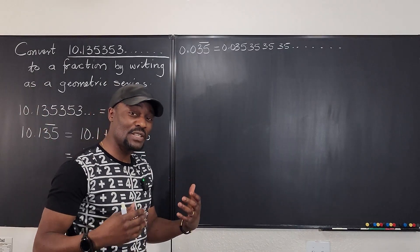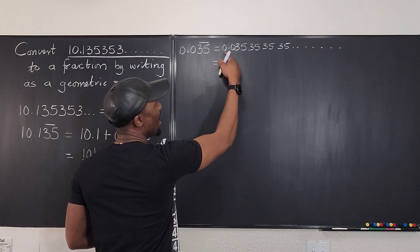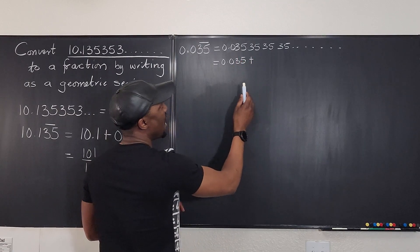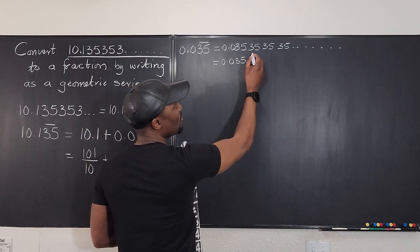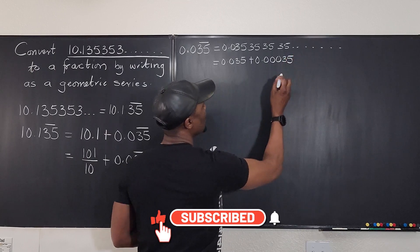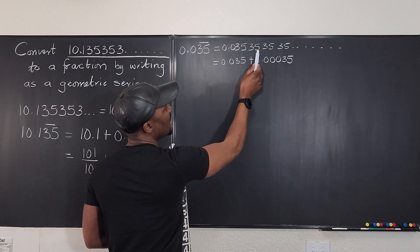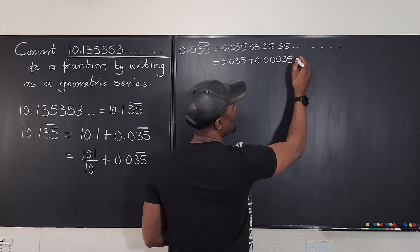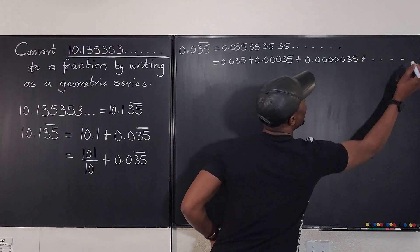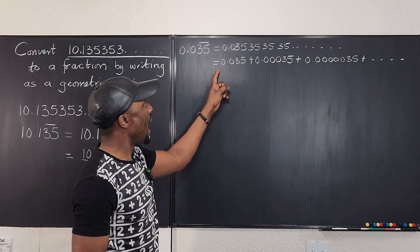So we have 0.003535... Now the next thing is to write this as a sum. The first repeating part is 0.0035, plus the next two digits give us 0.0000035, plus the next two give us 0.000000035, and this just keeps going. You only really need to write two terms, but I wrote a third one so you can see the pattern.